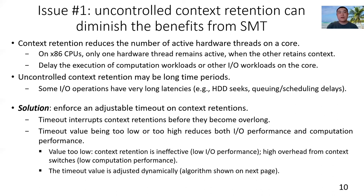If the value is too low, context retention is ineffective and leads to low IO performance. The low value also incurs high overhead from context switches that cause low computation performance, as we have explained earlier. If the value is too high, high delay will be caused to other IO workloads on the core. The timeout value is dynamically adjusted and its algorithm is shown on the next slide.